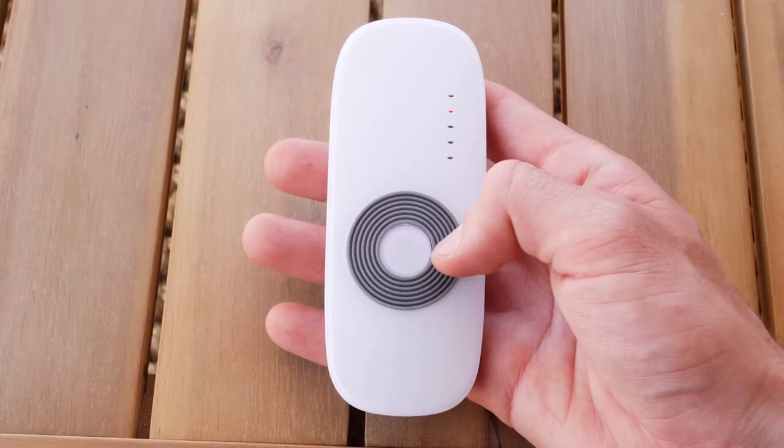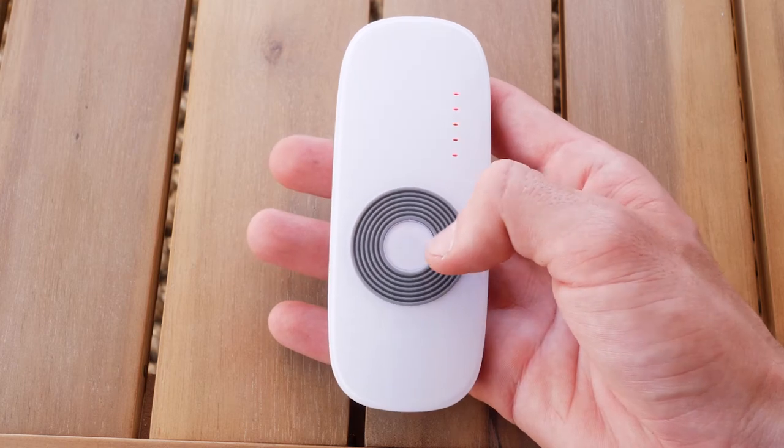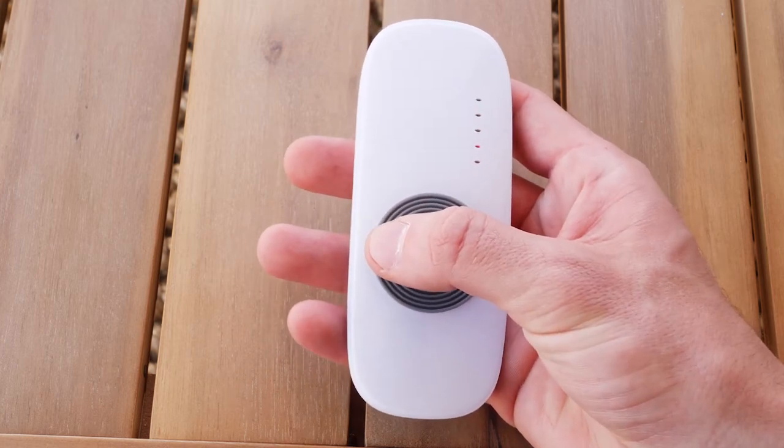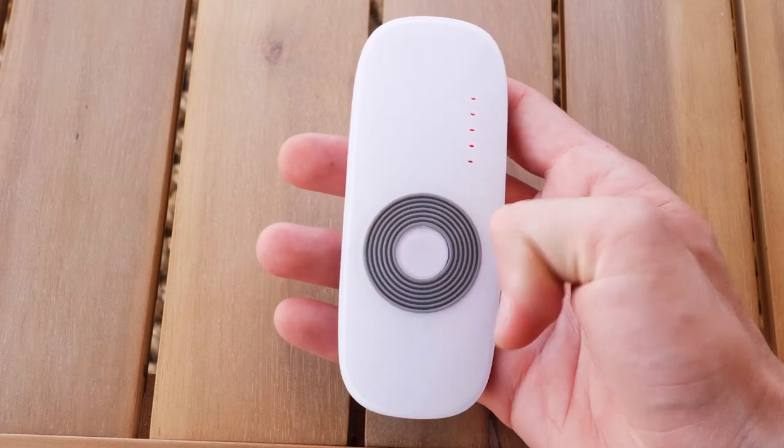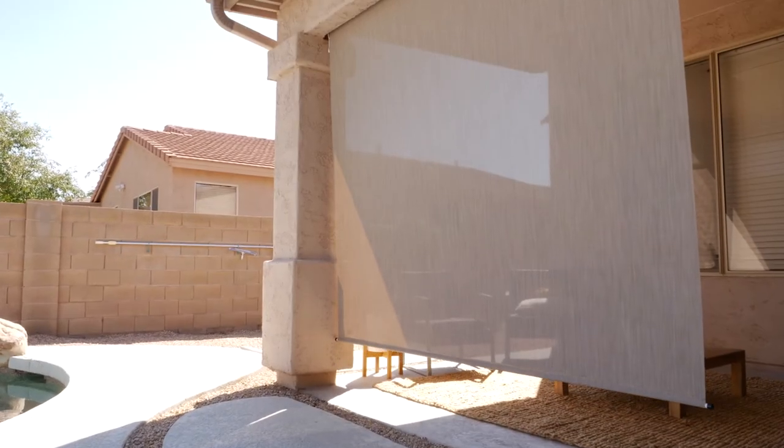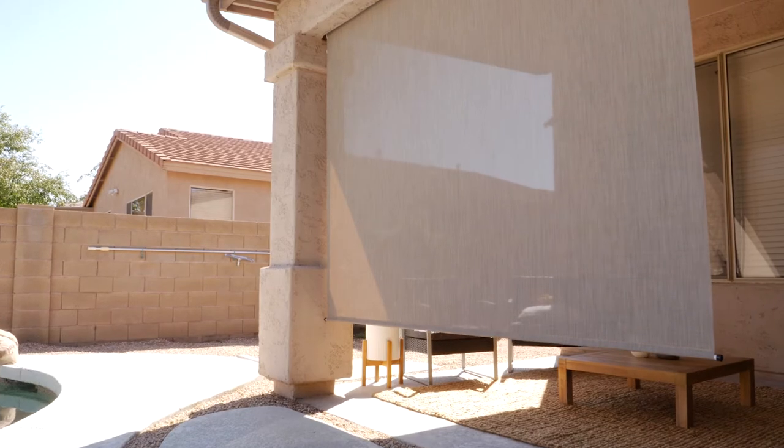The remote comes pre-programmed to operate on channel 1. To change the channel you're operating, press the channel increase button or the channel decrease button. Your remote also comes pre-programmed with top and bottom stop limits.